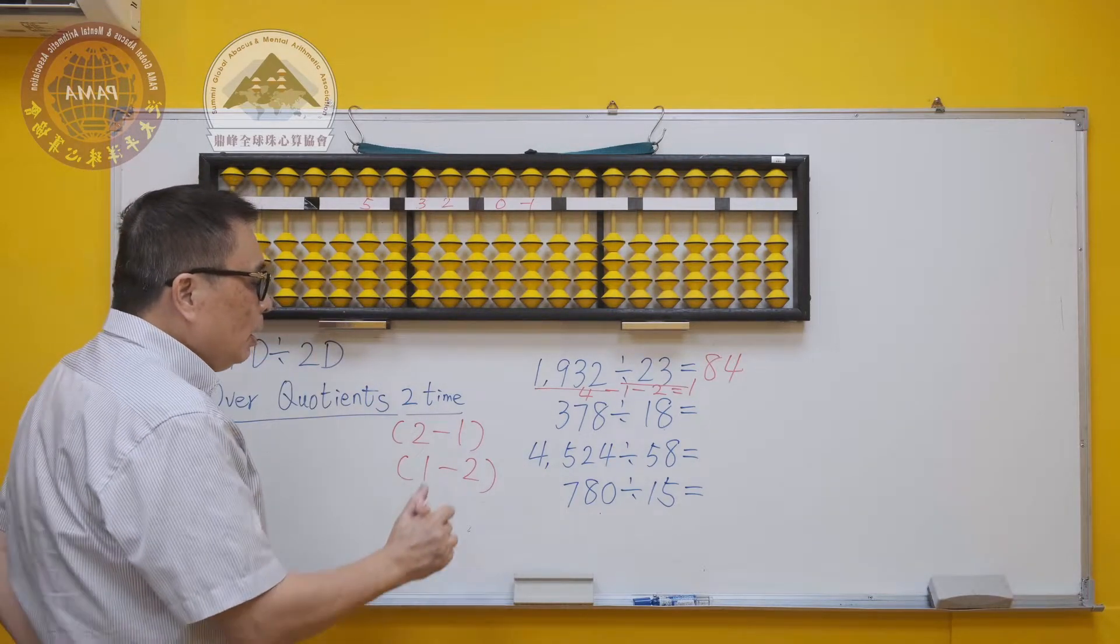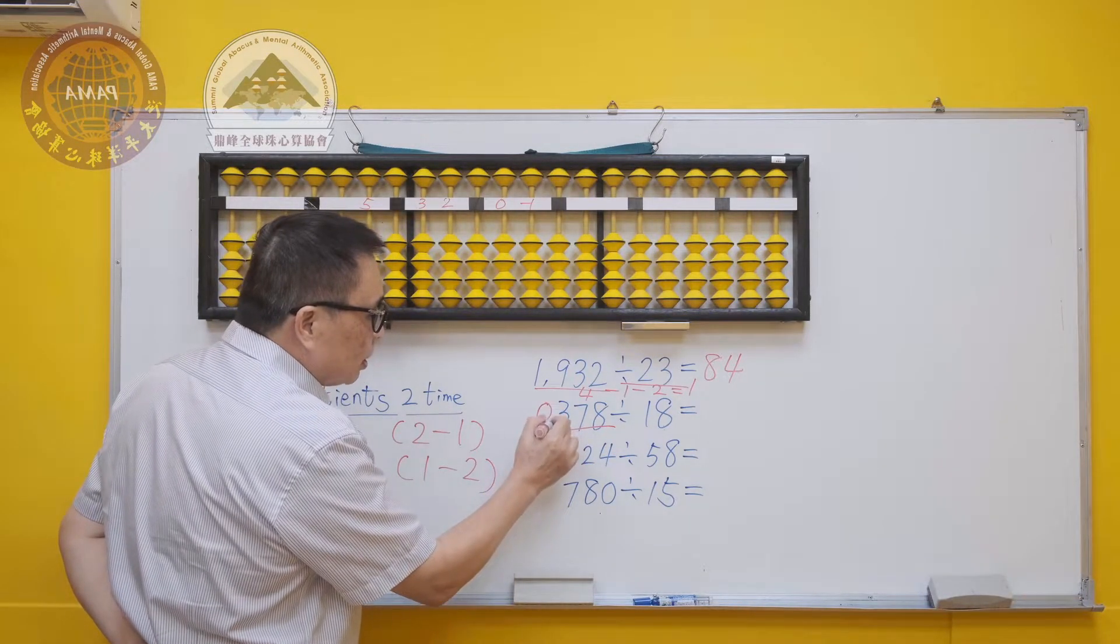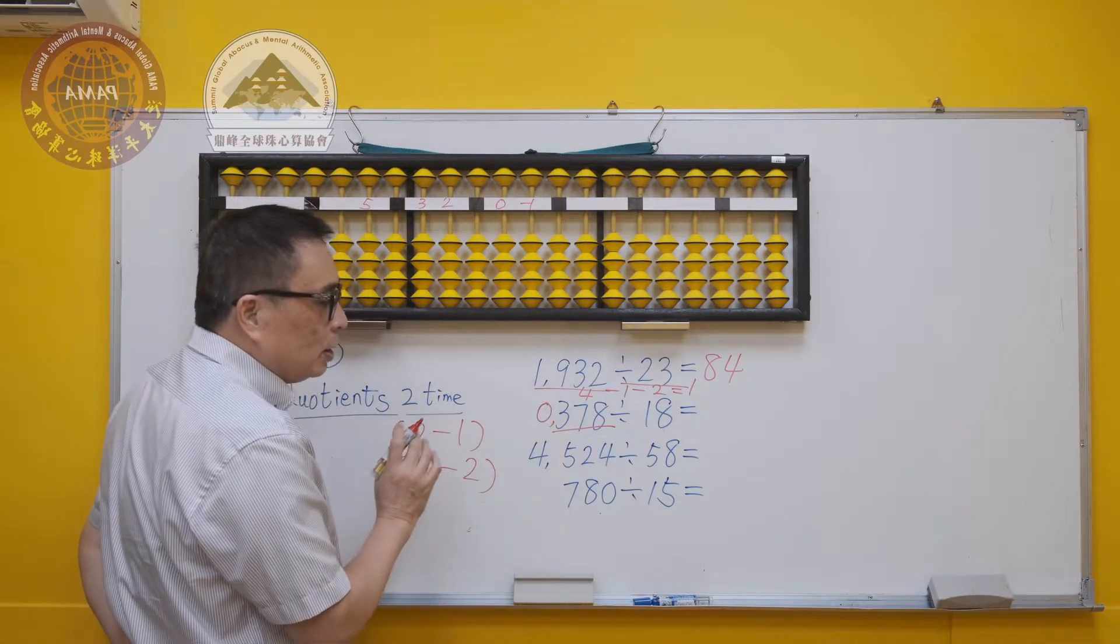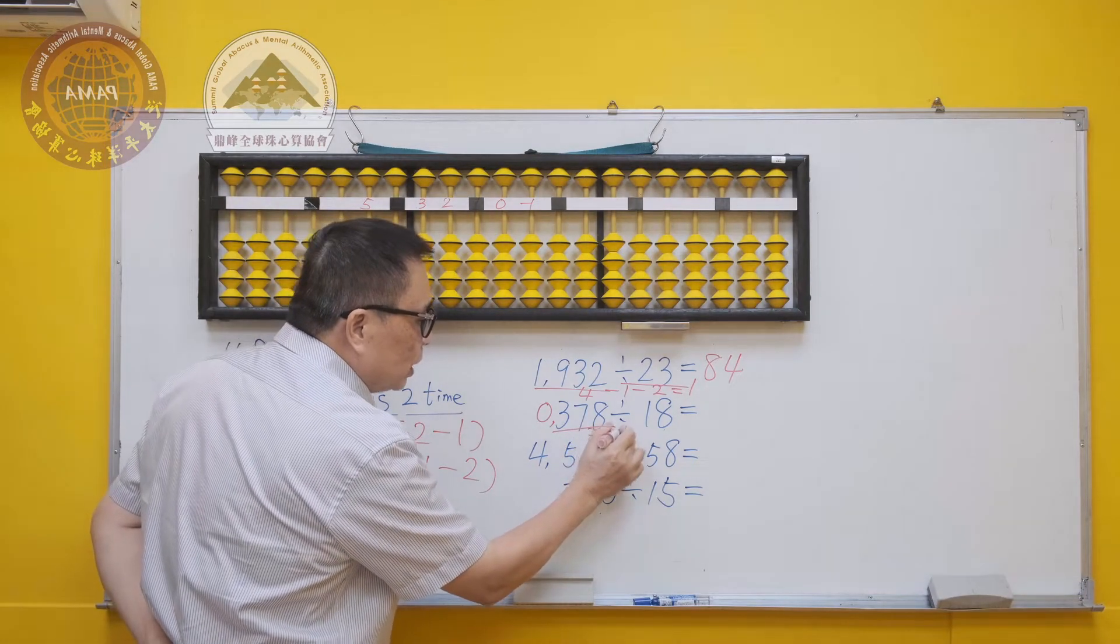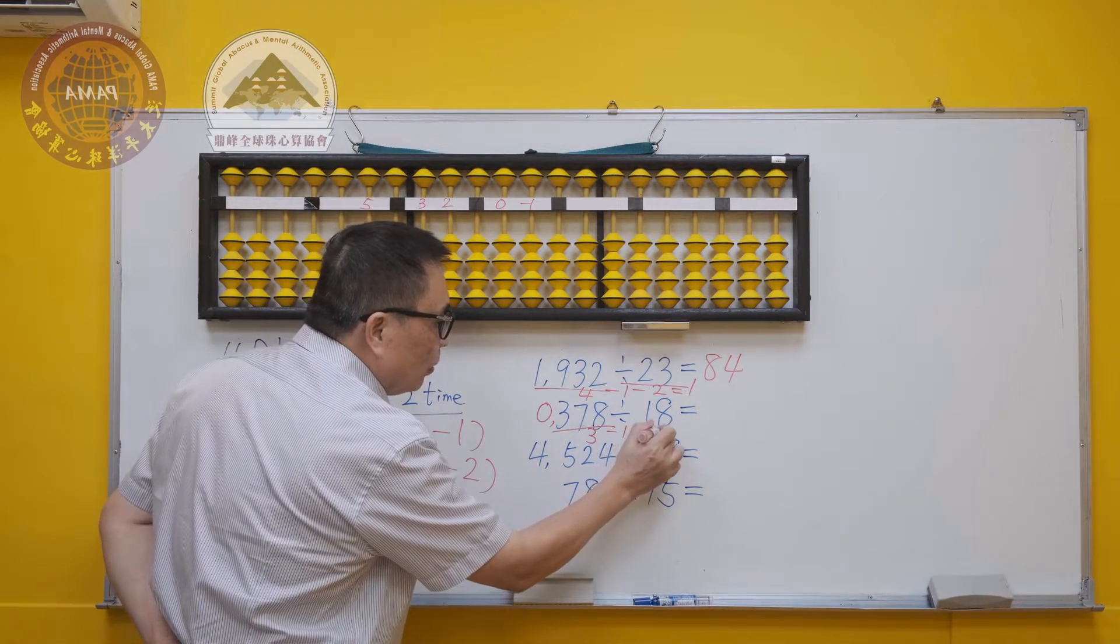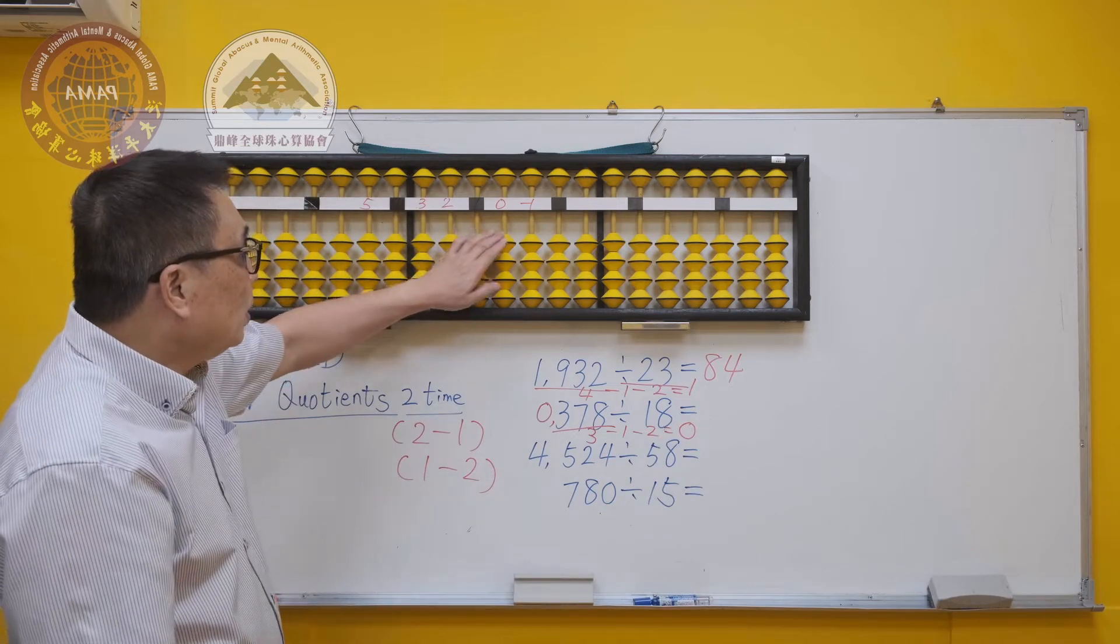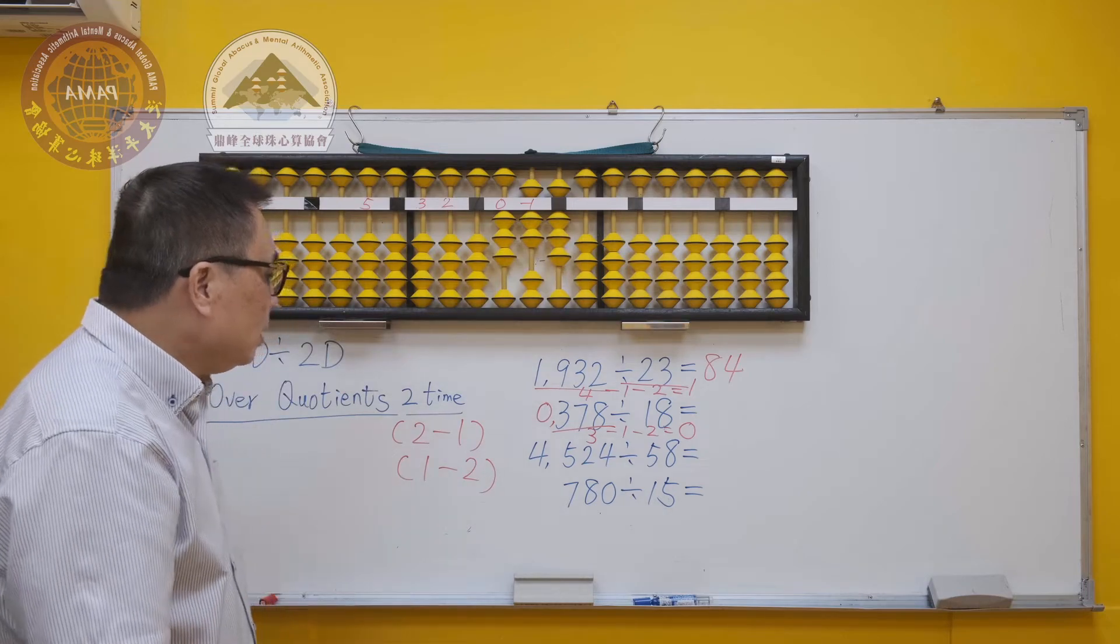Let us look at the second question. The dividend has one digit lesser. If you place a 0 in front of the dividend, it actually looks the same as the previous question. However, 0 has no meaning here. So the starting point is 0. On the abacus, let us find the starting point 0 and place the dividend.